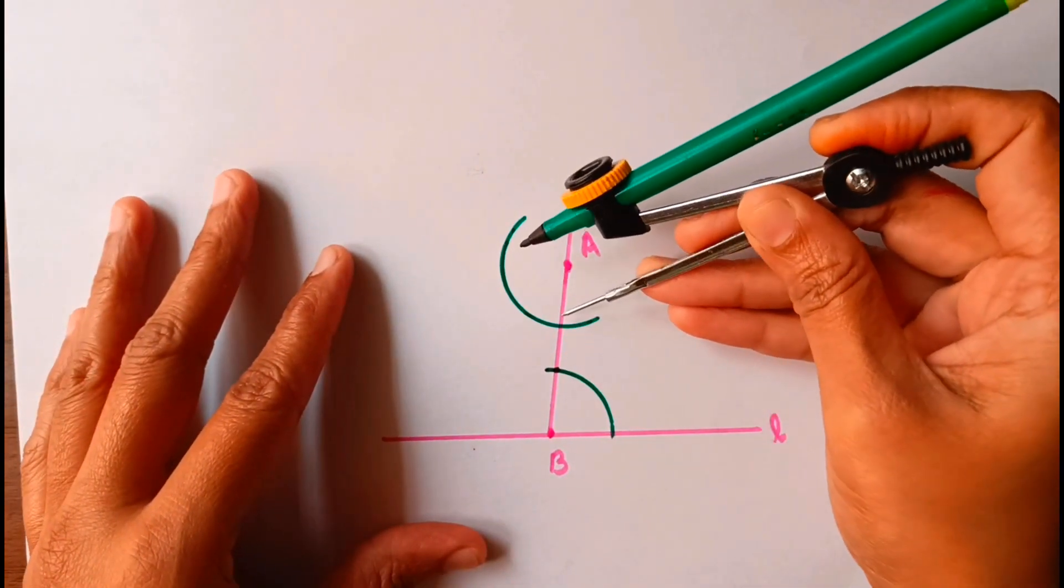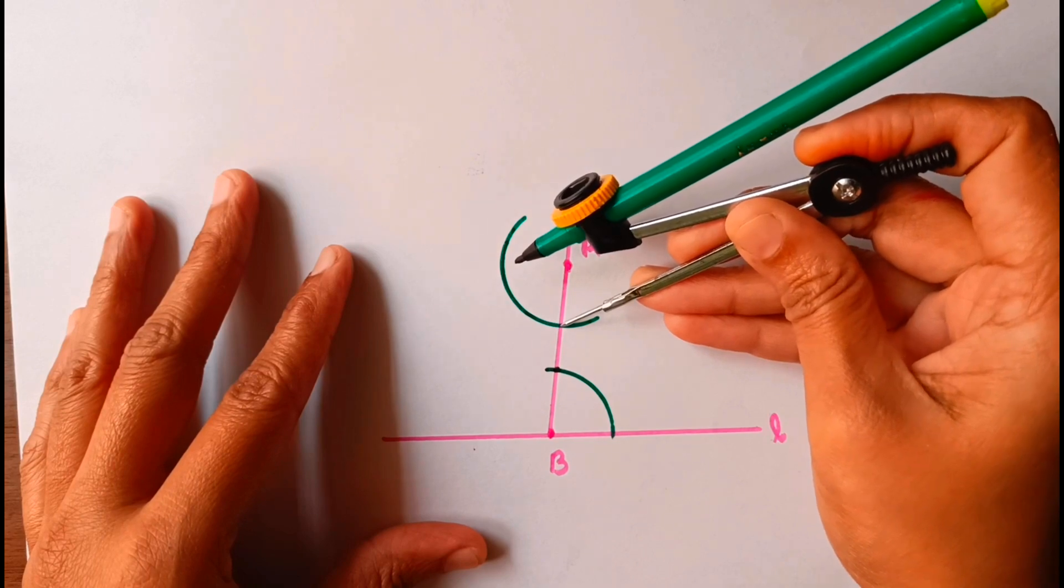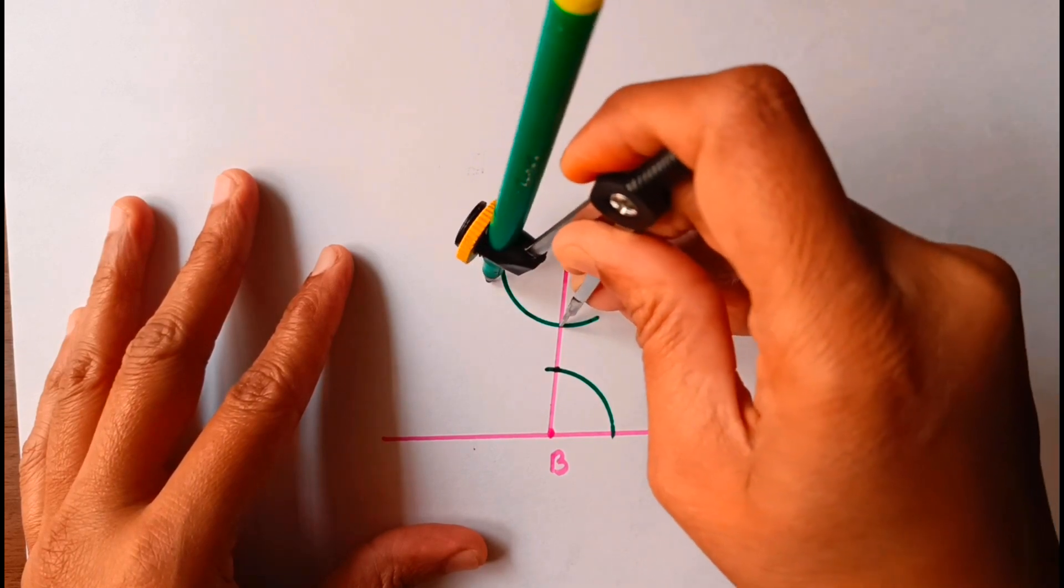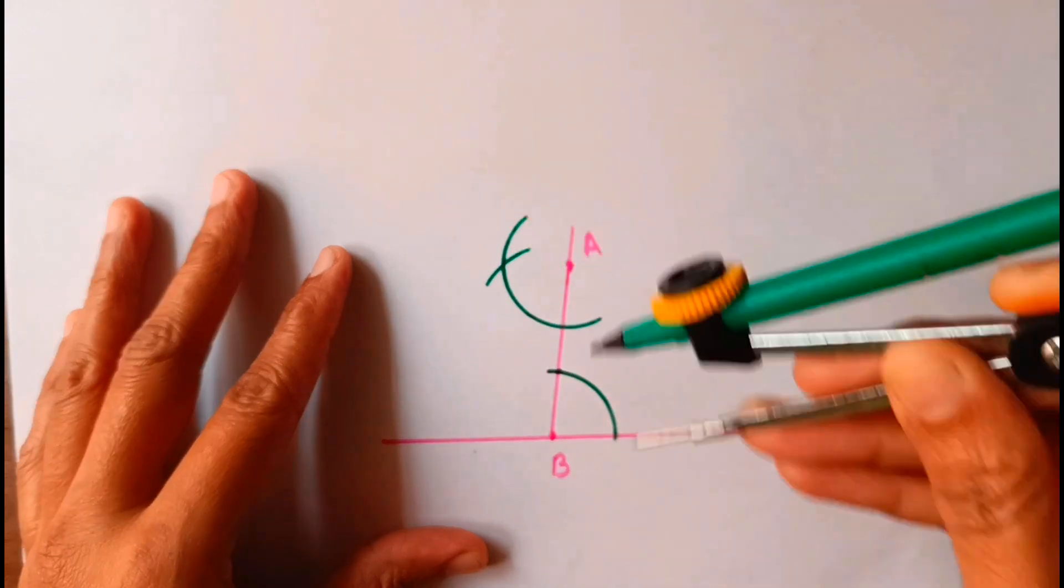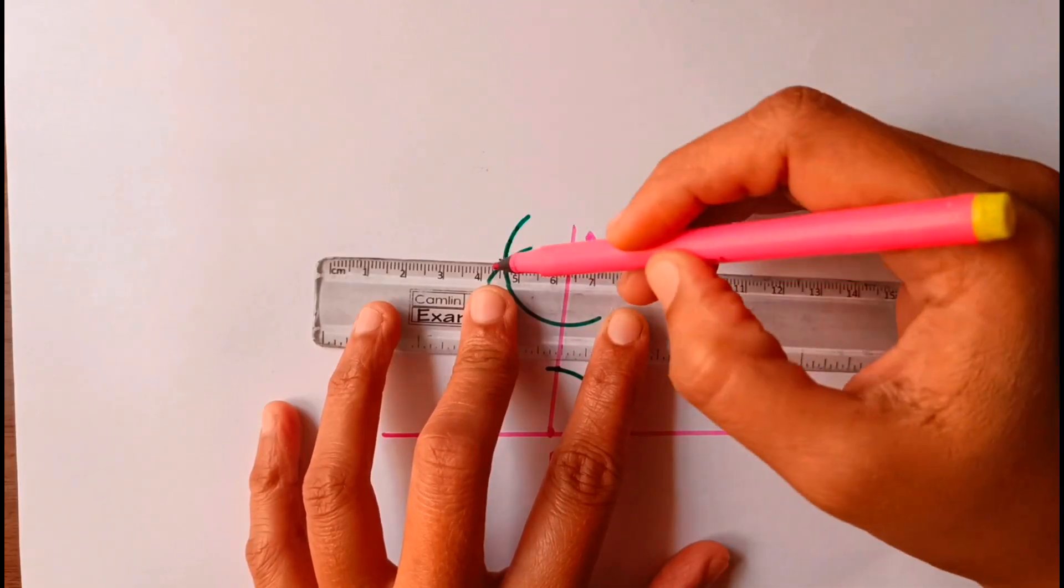You have to keep this tip here on this point and cut here on the arc. Just join the two points.